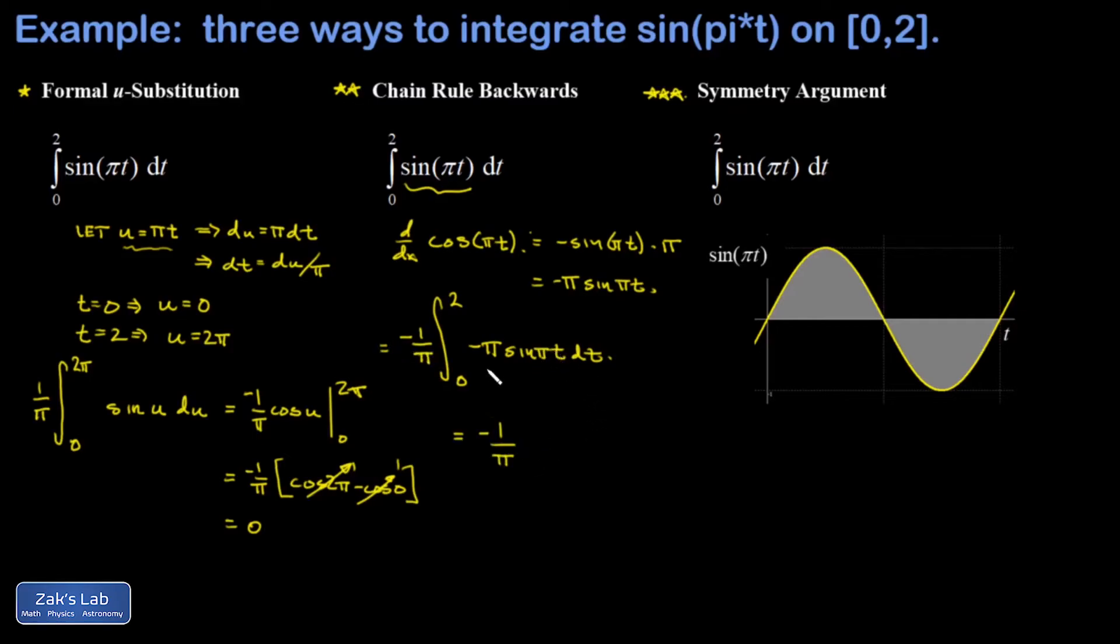Now my antiderivative is easily guessable. The thing I differentiate to get negative pi sine pi t is just cosine pi t. And again, leaving the one over pi factored out in front, I get the cosine of two pi minus the cosine of zero, and again that's one minus one, and my integral vanishes.